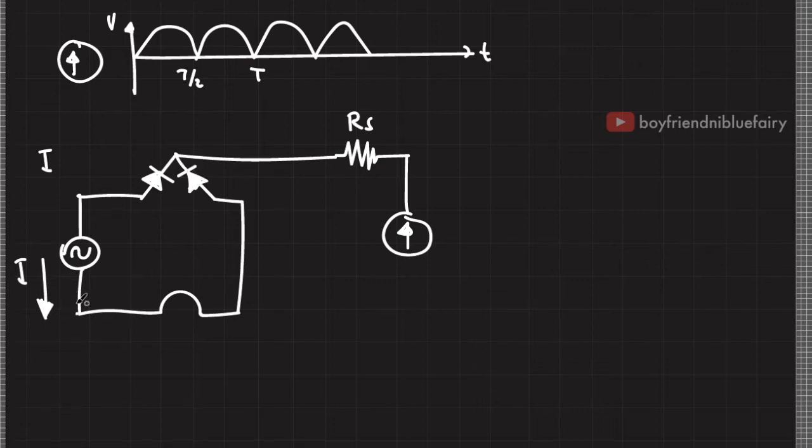So during the second half cycle, if the current flows this way, it will be blocked by this diode. But the current flowing on the opposite direction will be recorded by the galvanometer.